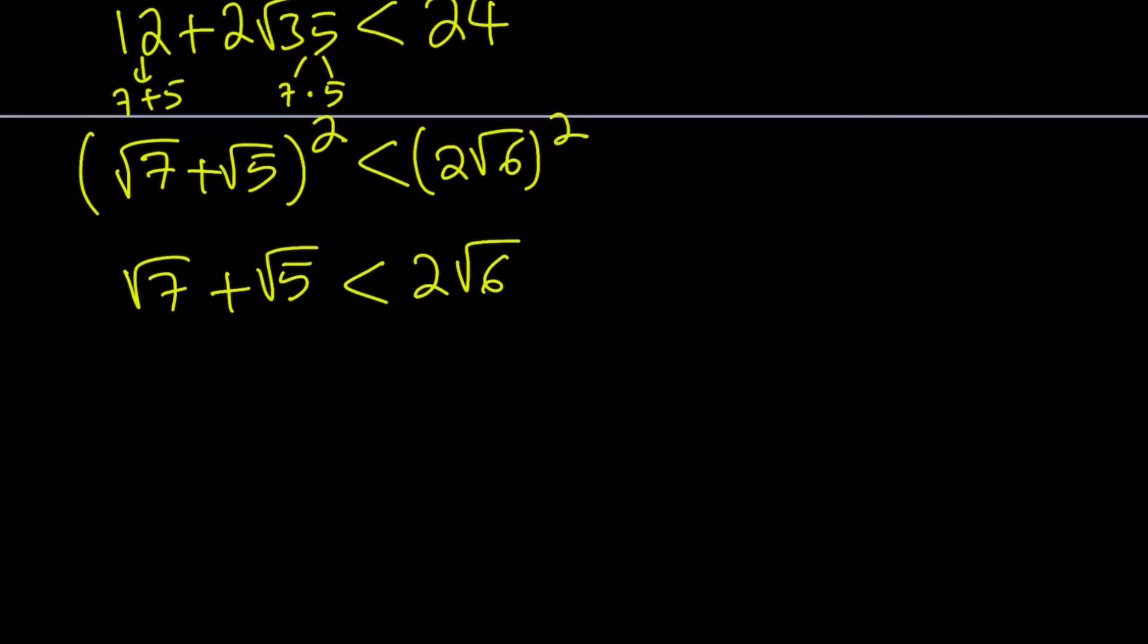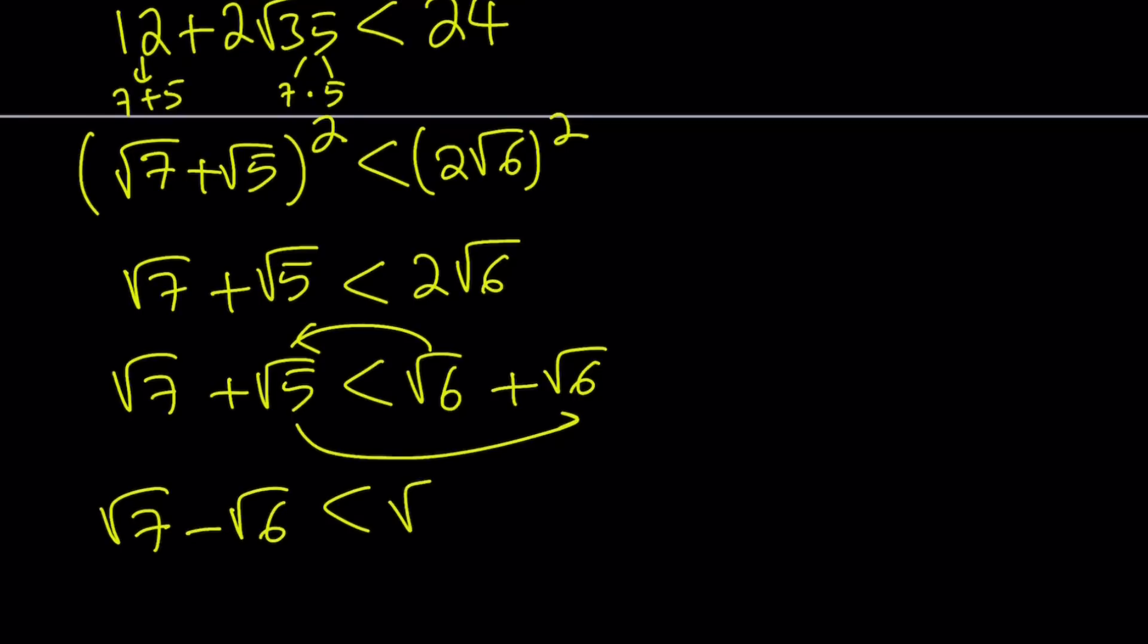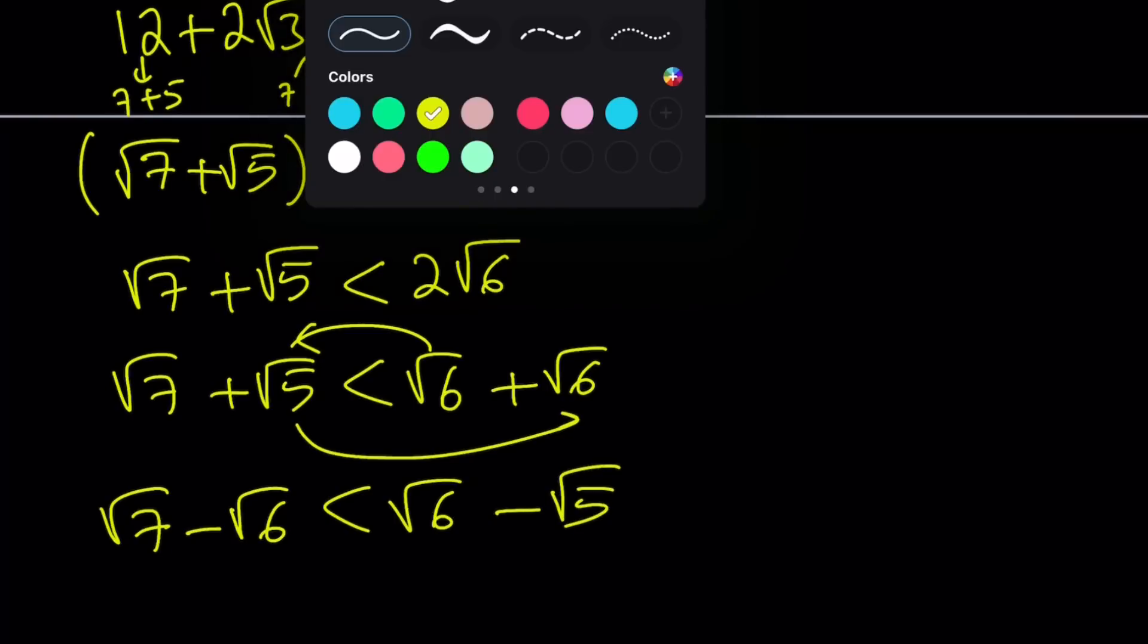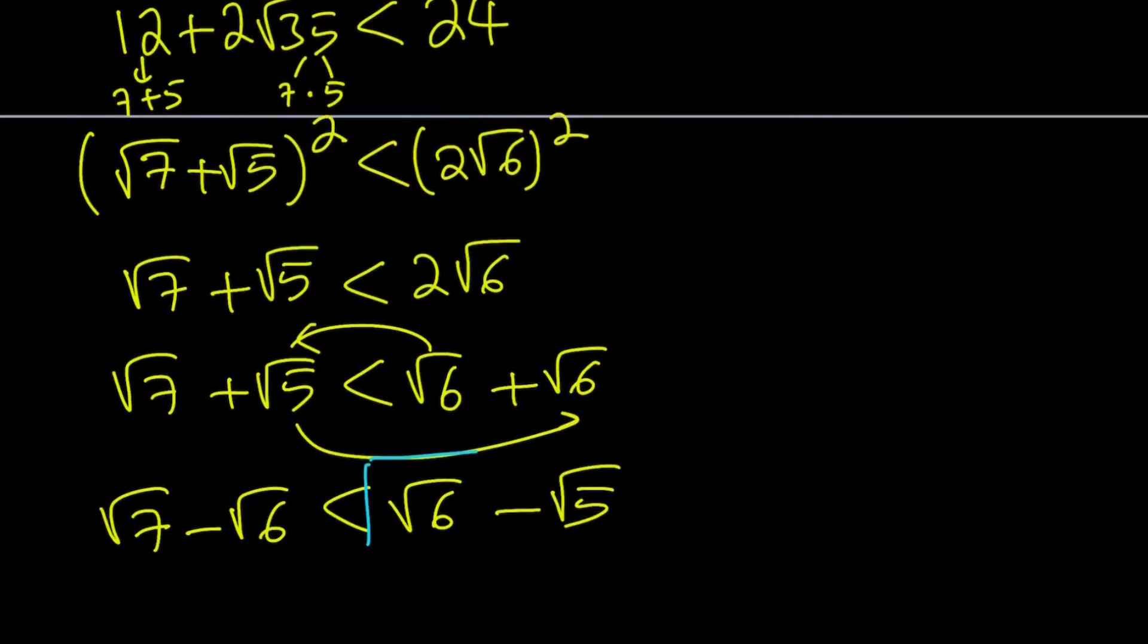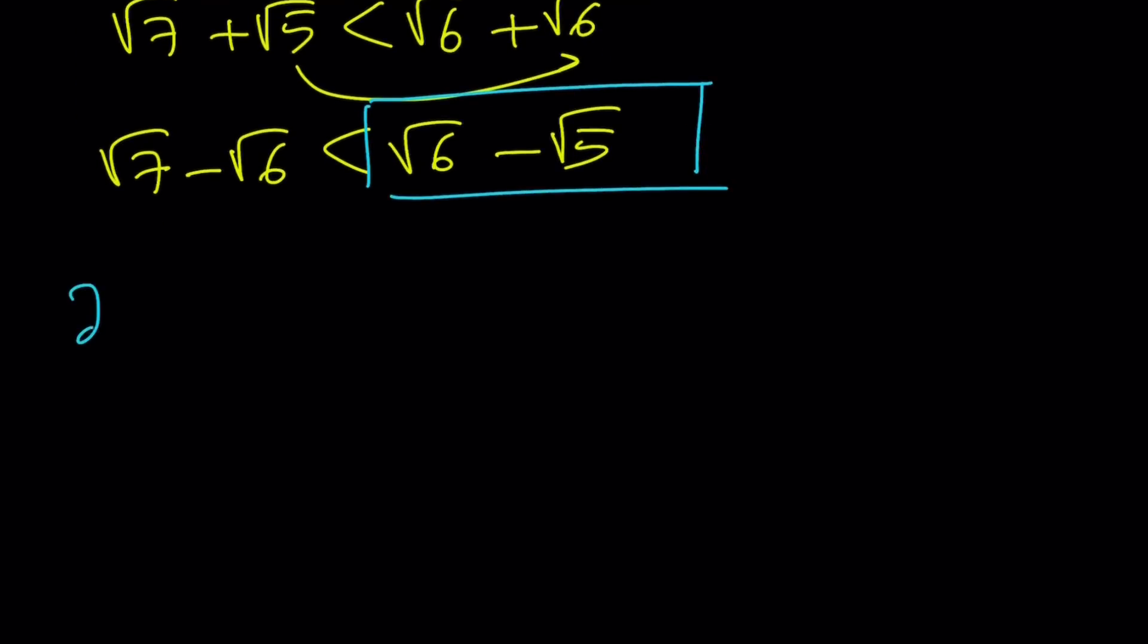So here's how we're going to do it. We're going to break down 2 square root of 6 into square root of 6 plus square root of 6, and then we're going to bring one of these over here and this over here. So this is going to turn into square root of 7 minus square root of 6 is less than square root of 6 minus square root of 5. And we were trying to find the larger number, and this happens to be that.